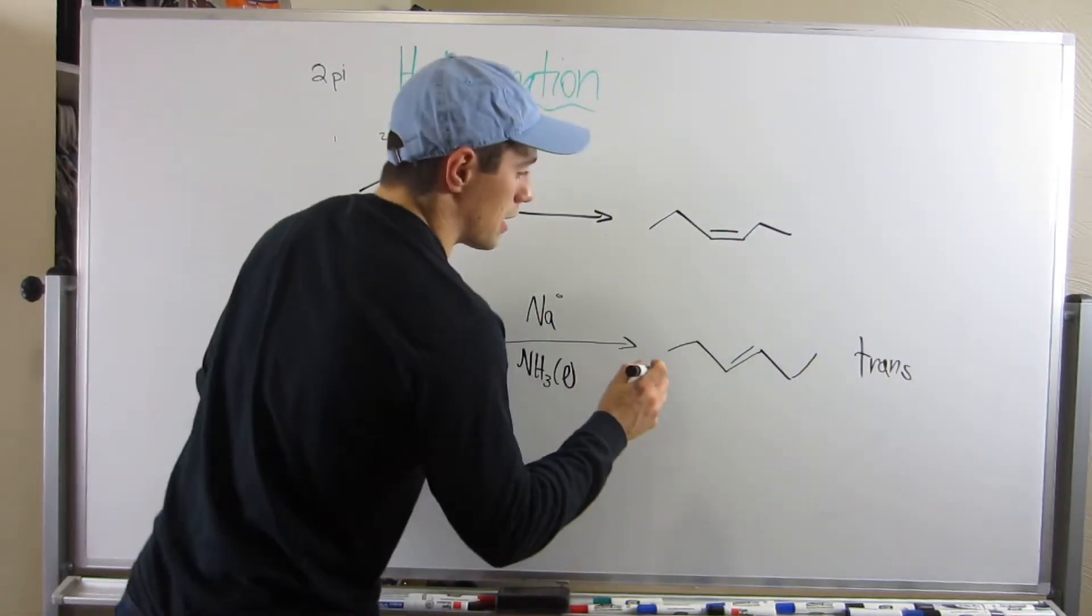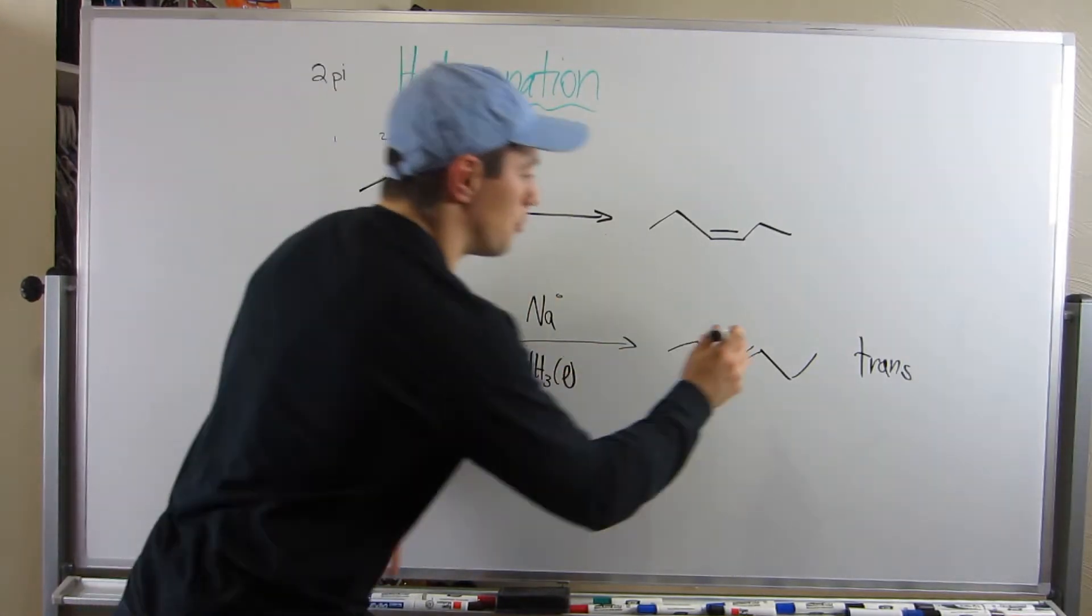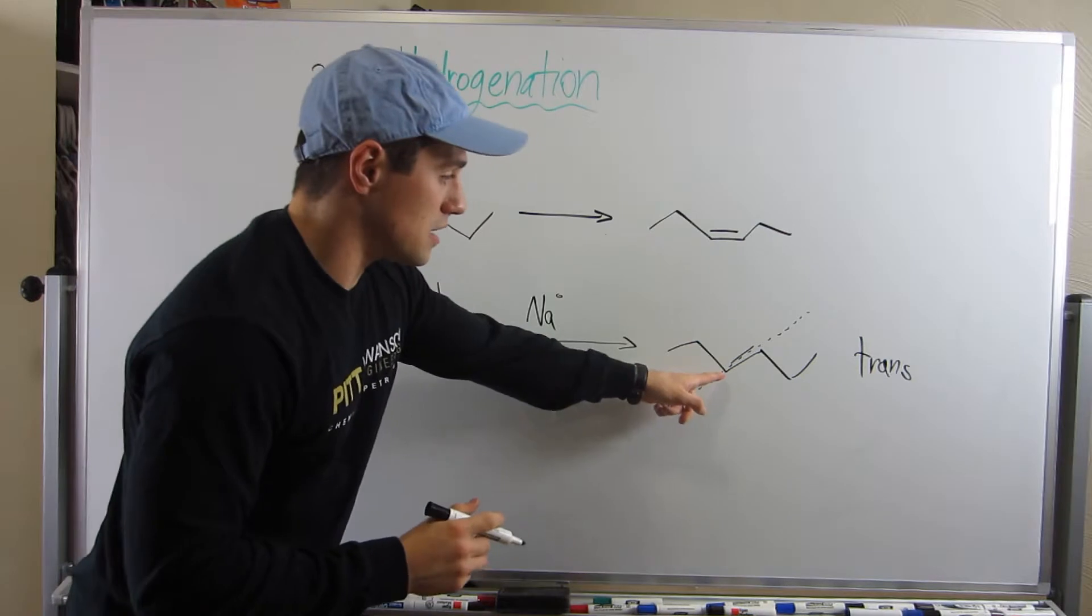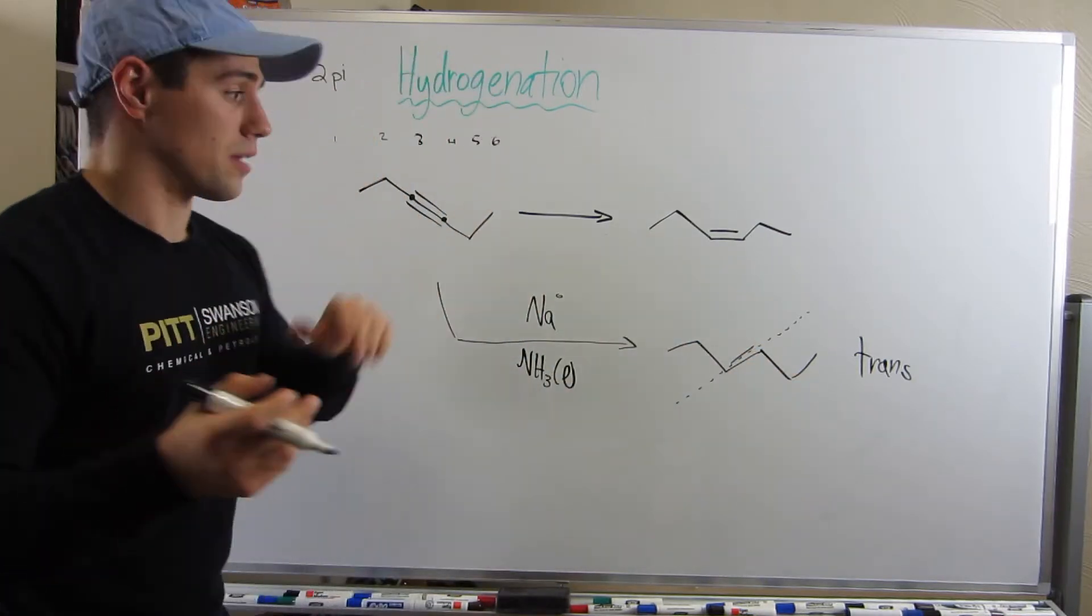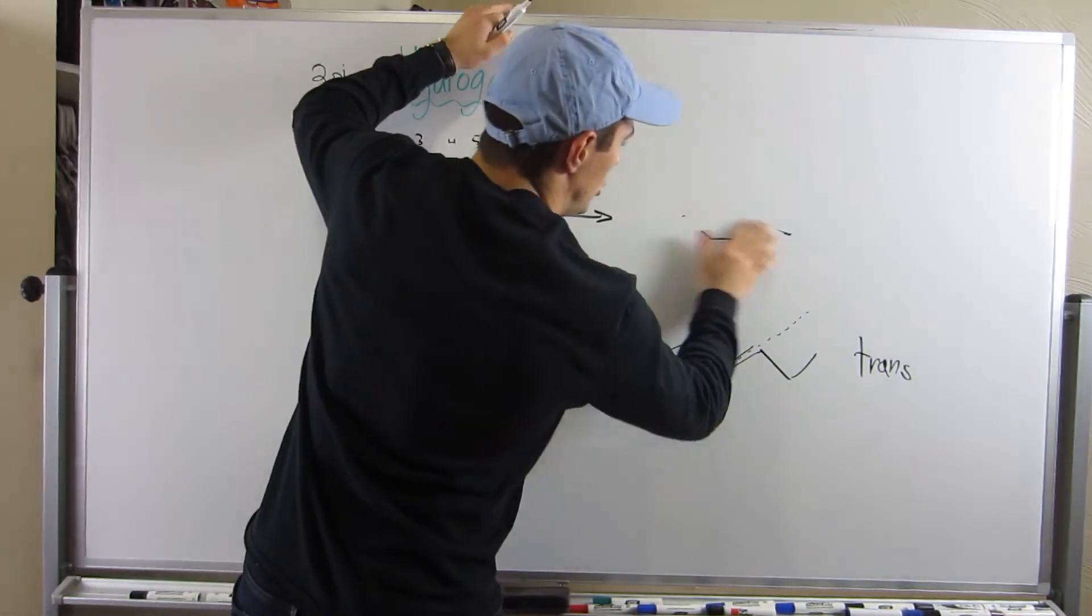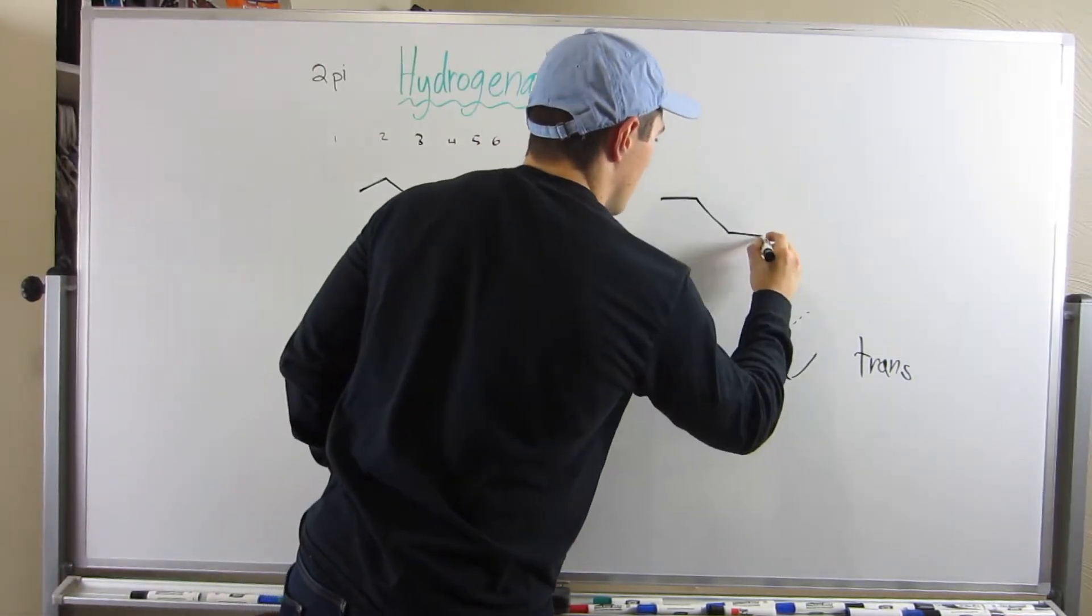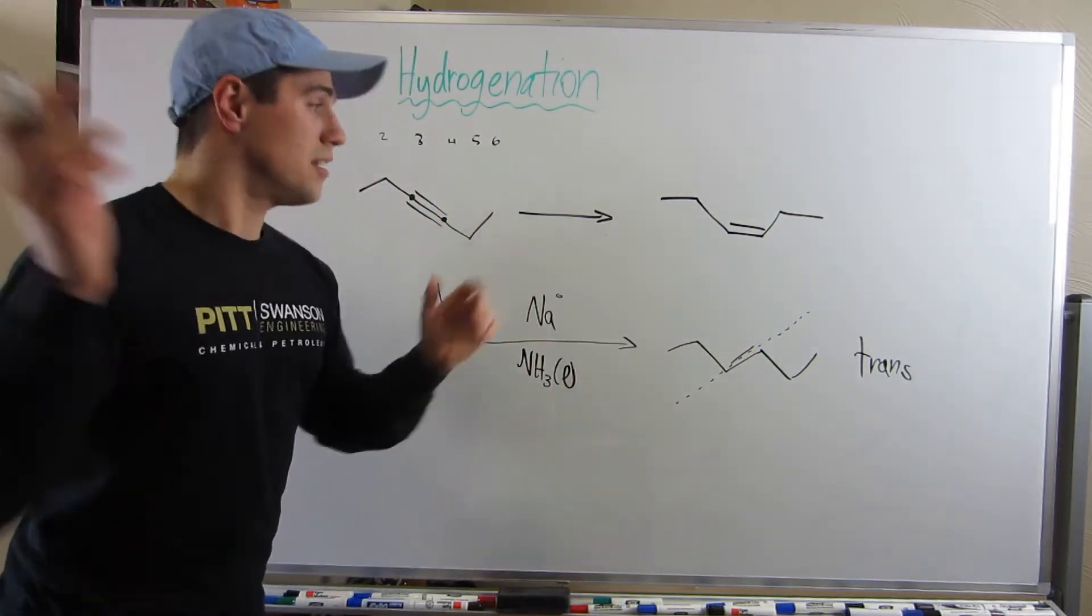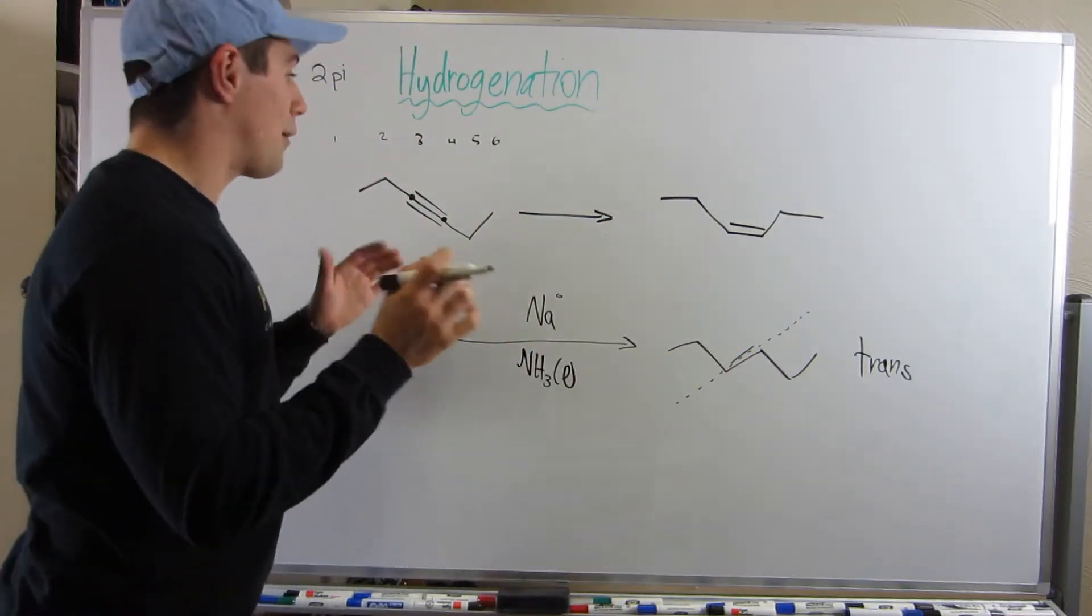And we know it's trans because if we walk the double bond, we cross it, we traverse it, it's trans. Okay. Now I'm going to redraw this. It's kind of ugly. Sorry about that. It looks funky, looks like the shrugging, shrugging shorter guy.